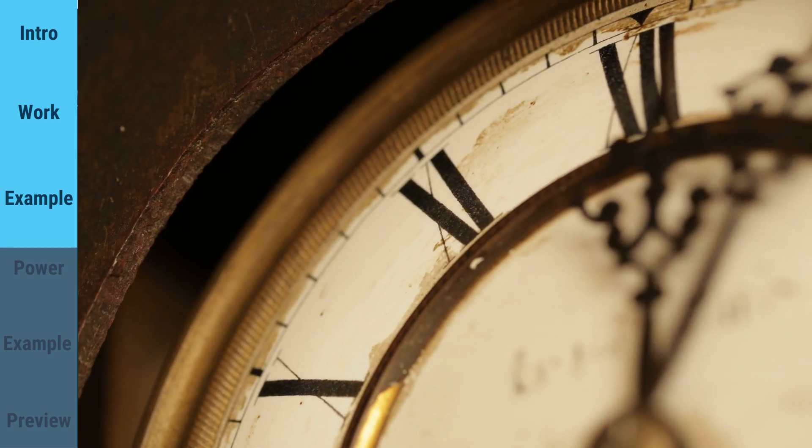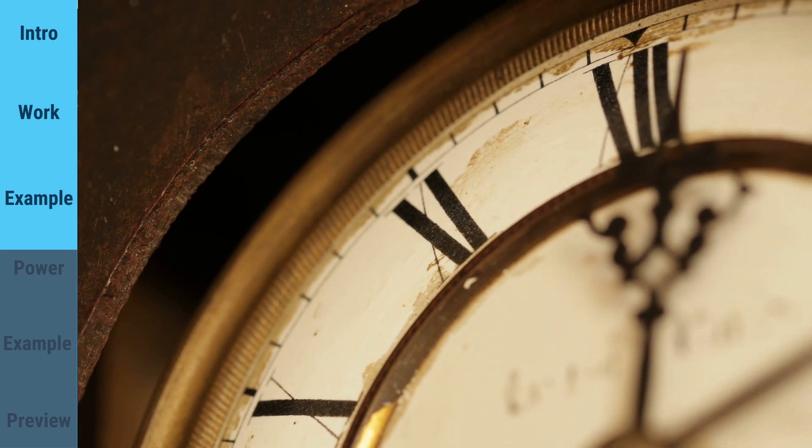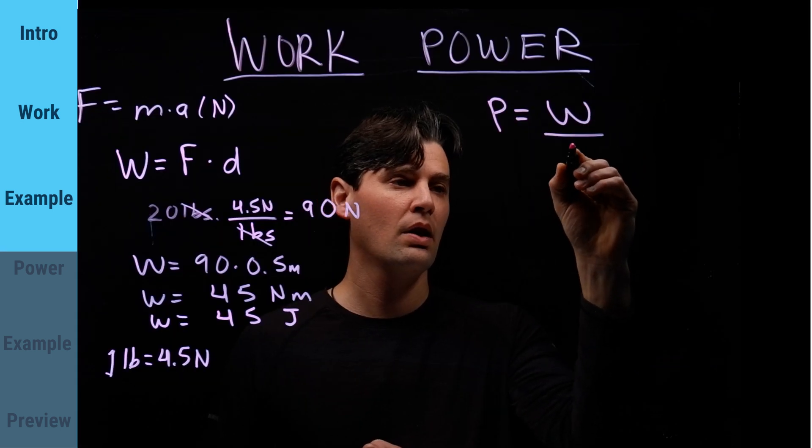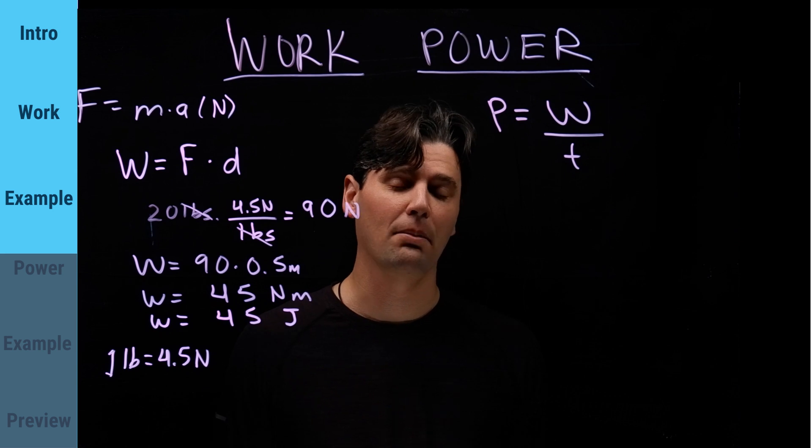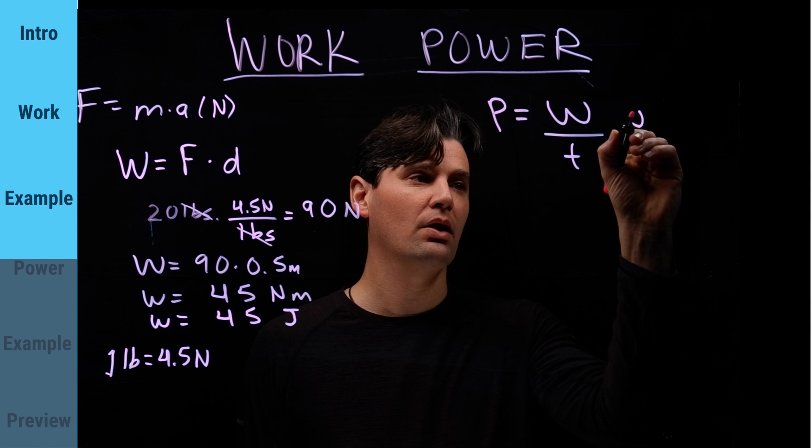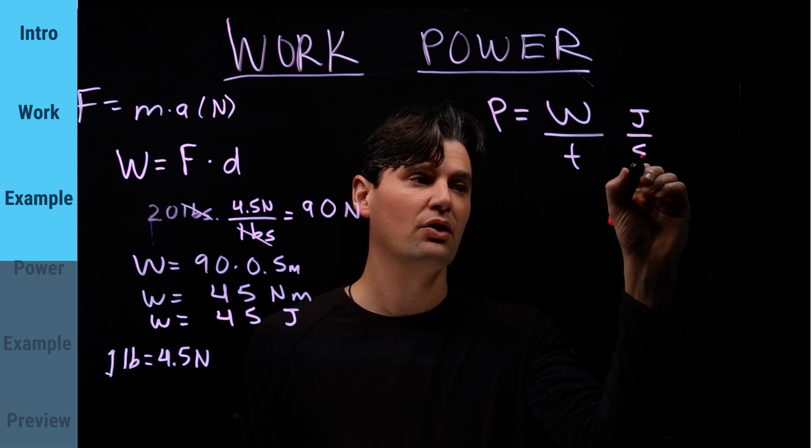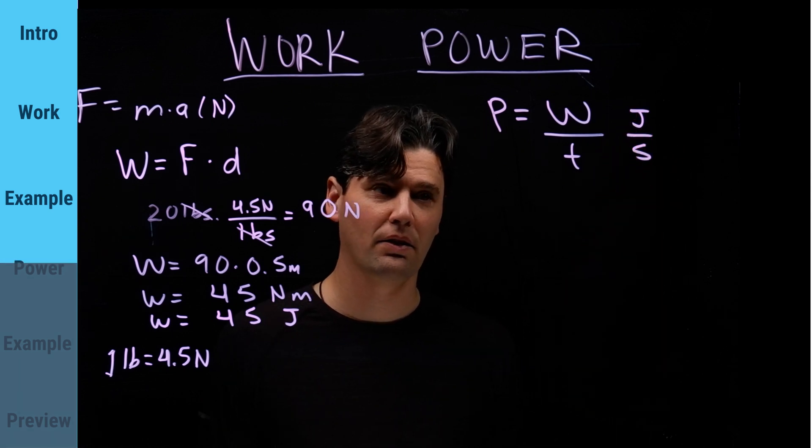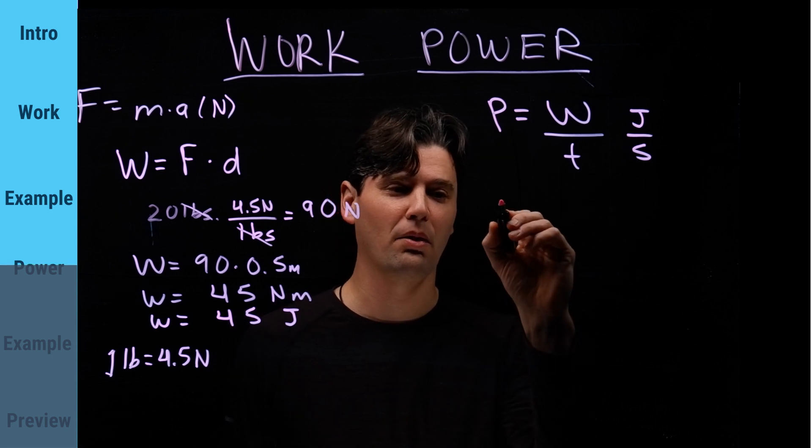Power is the work that we do in a given amount of time. This work is going to be joules, as far as the units go, like we just talked about. So it'll be joules per second. Time is typically measured in seconds.